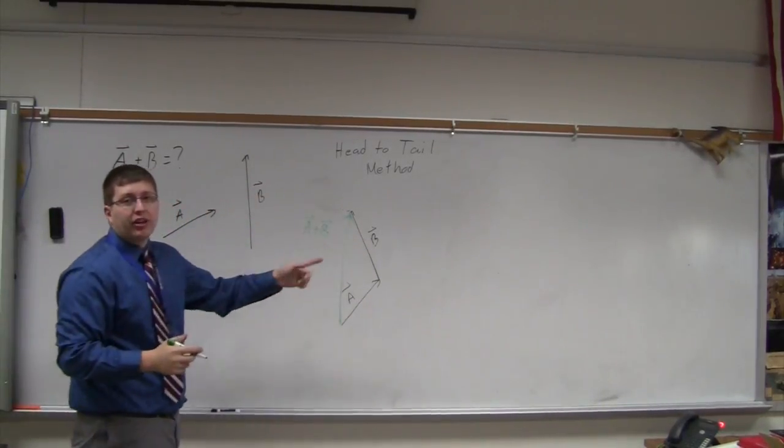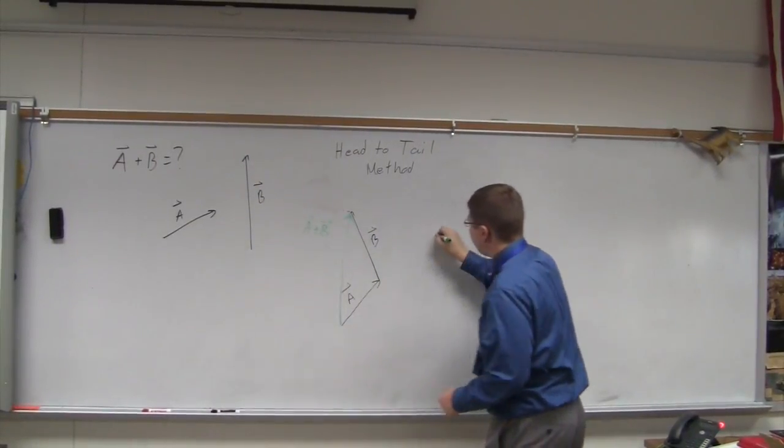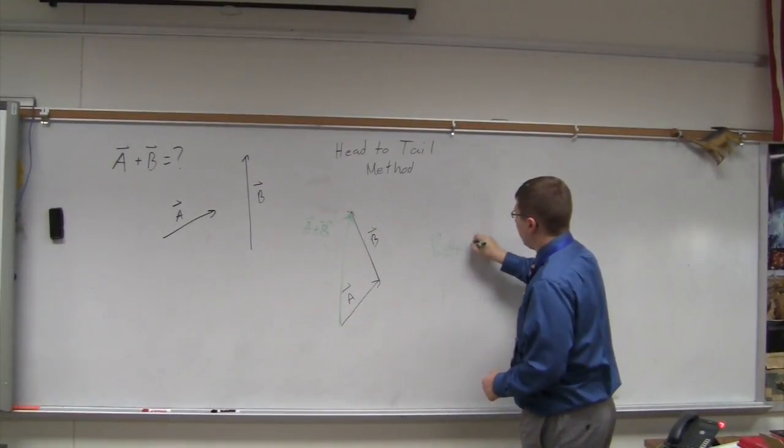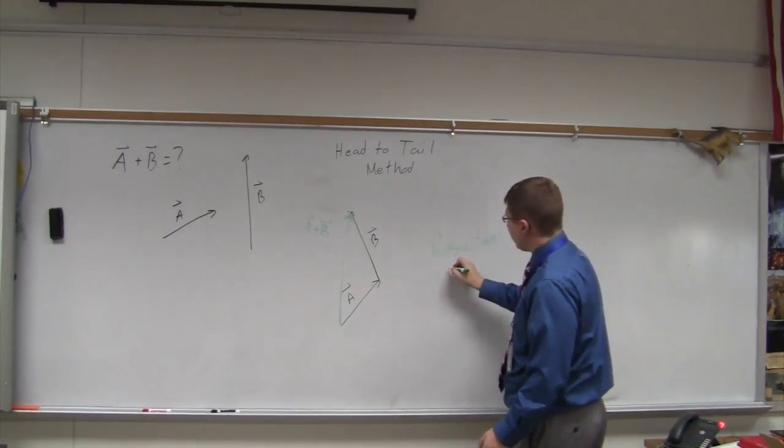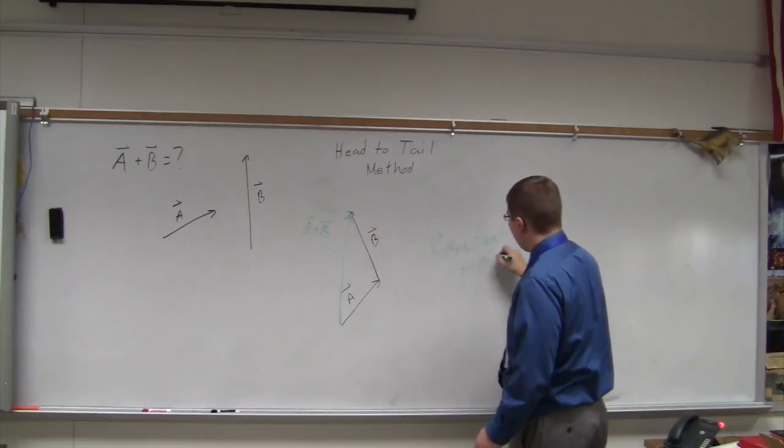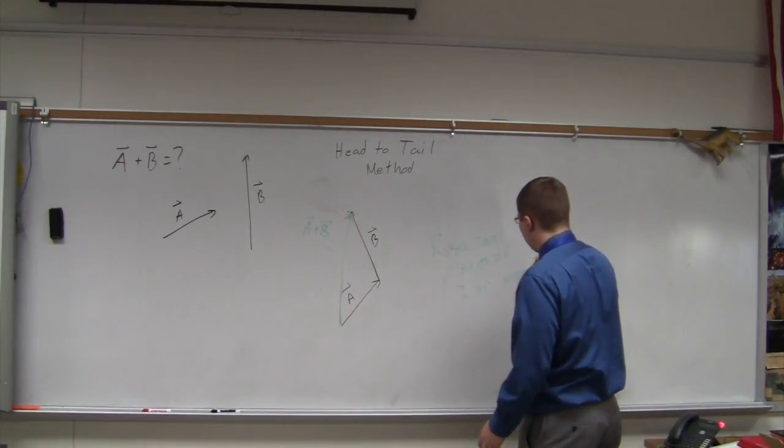By the way, that green line has a special name. That is also called the resultant. The resultant is very simply the sum of two or more vectors.